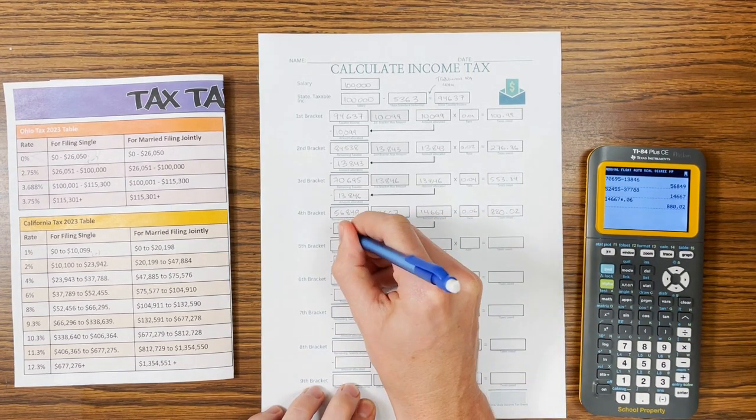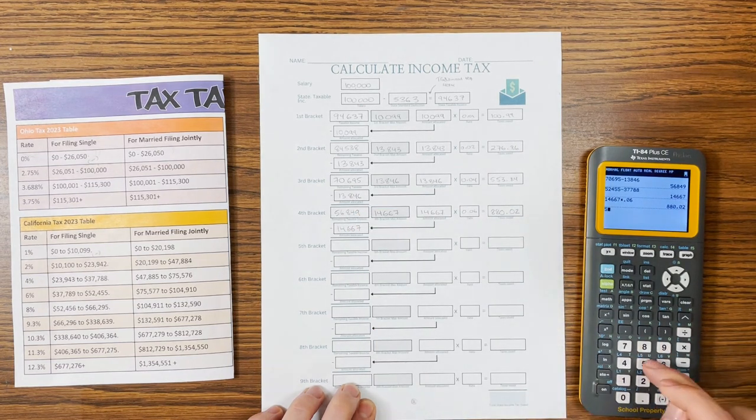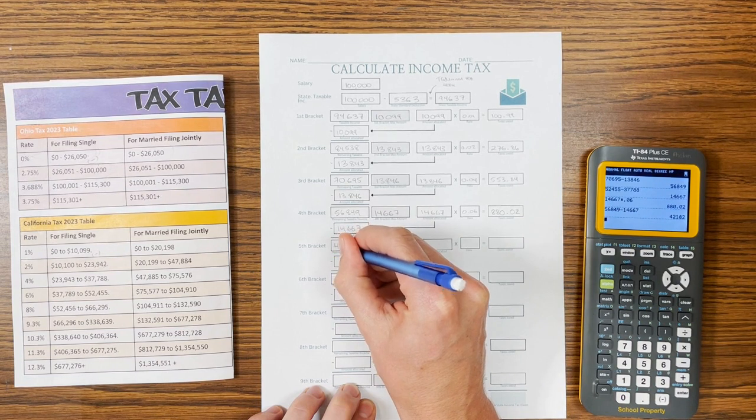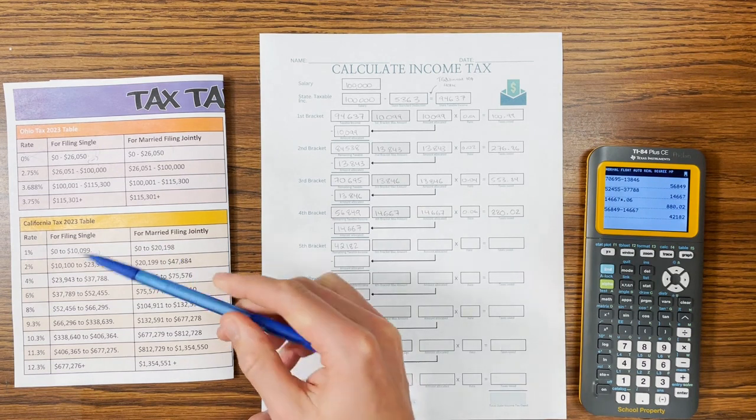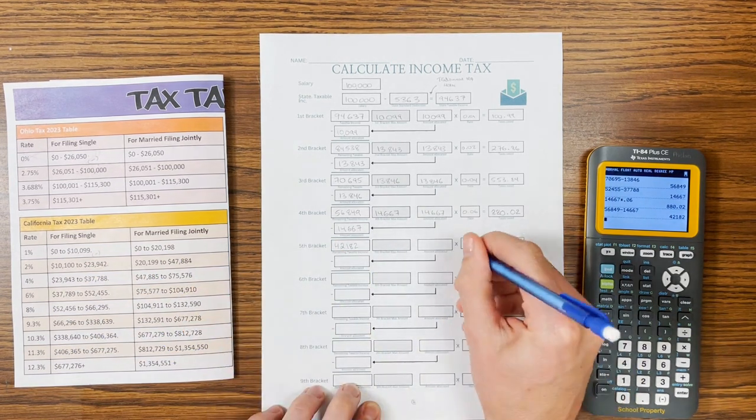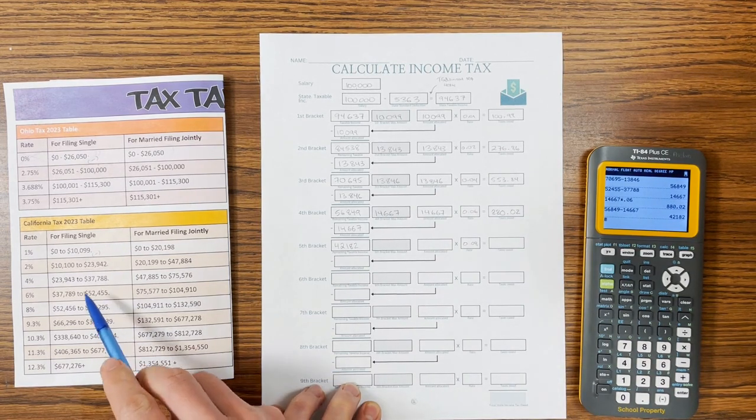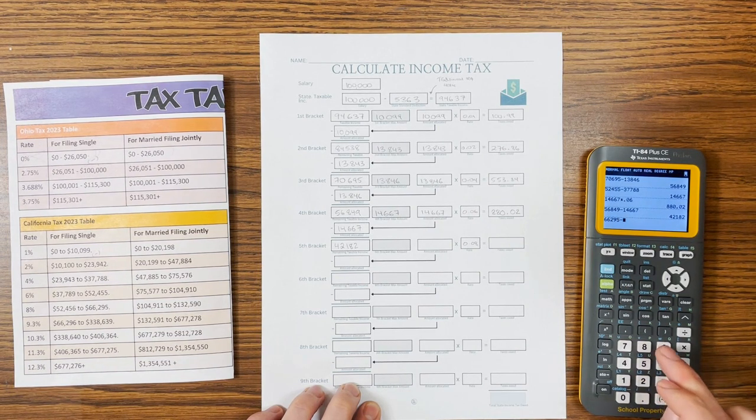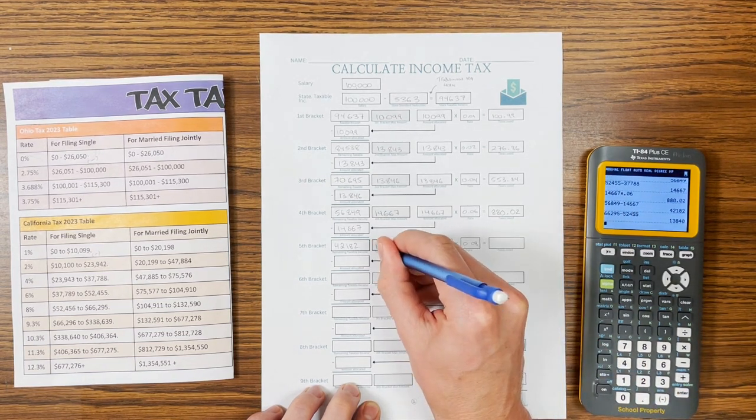So then $14,667 has been taxed already. $56,849 minus $14,667, $42,182. And the fifth bracket, we are up to the 8% bracket. So that's 0.08. And $66,295 minus the $52 we've already taxed. $66,295 minus $52,455. $13,840.